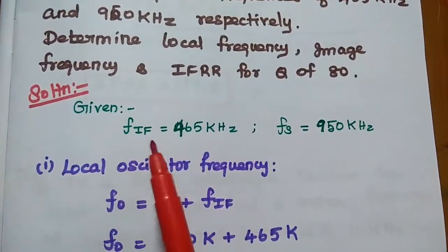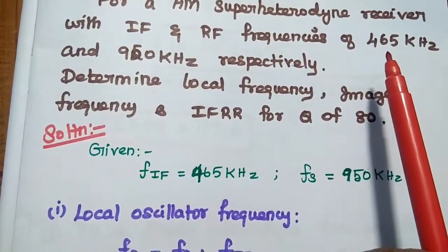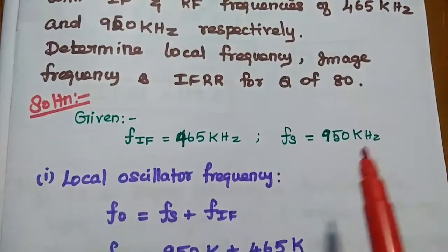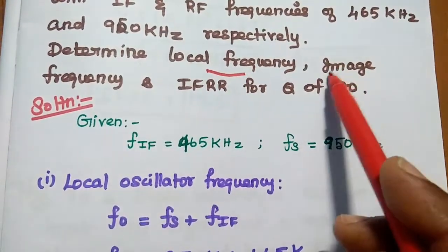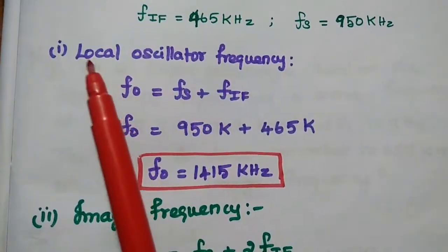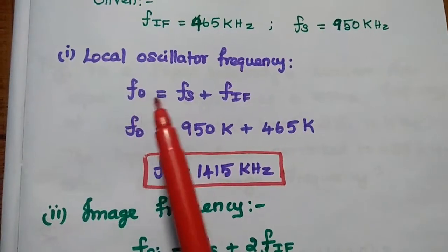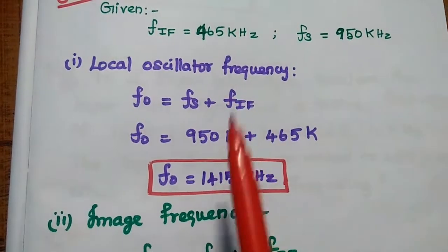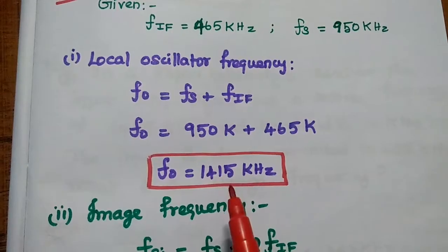In the solution, first we write down the given data: IF frequency is 465 kHz and RF frequency is 950 kHz. From these two values, we find the local oscillator frequency. Using the formula F0 equals FS plus FIF, substituting the values, we get the local oscillator frequency as 1415 kHz.